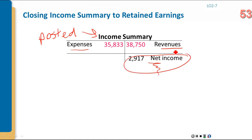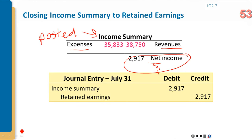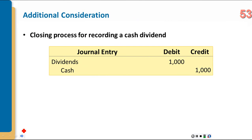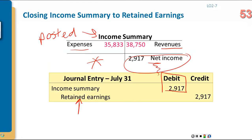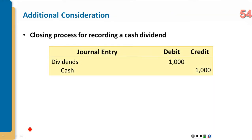Step three: close the income summary account. Since it shows a net income (credit balance), you debit income summary to bring it to zero and credit retained earnings, moving the net income into the retained earnings account. Step four: close dividends. If dividends of $1,000 were paid, that account has a $1,000 debit balance. To zero it out, you credit dividends $1,000 and debit retained earnings $1,000. There are always exactly these four closing steps.